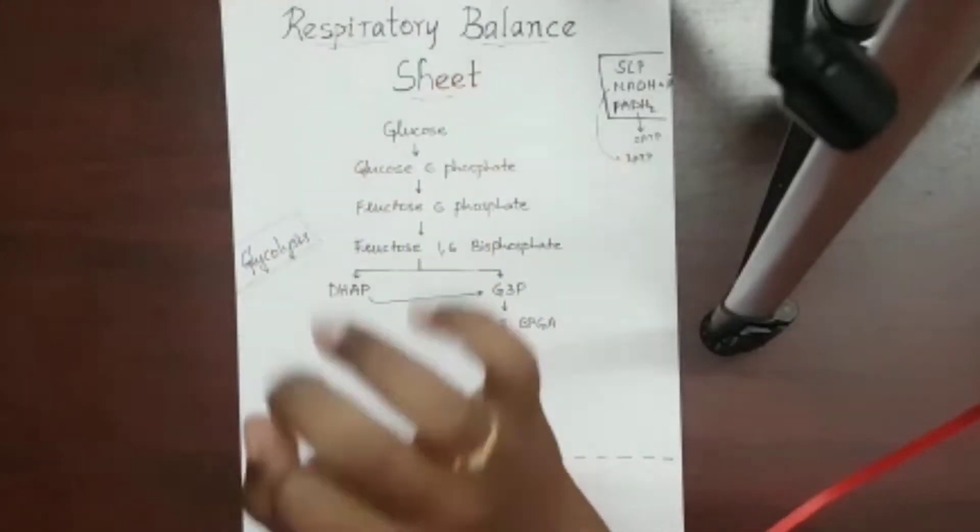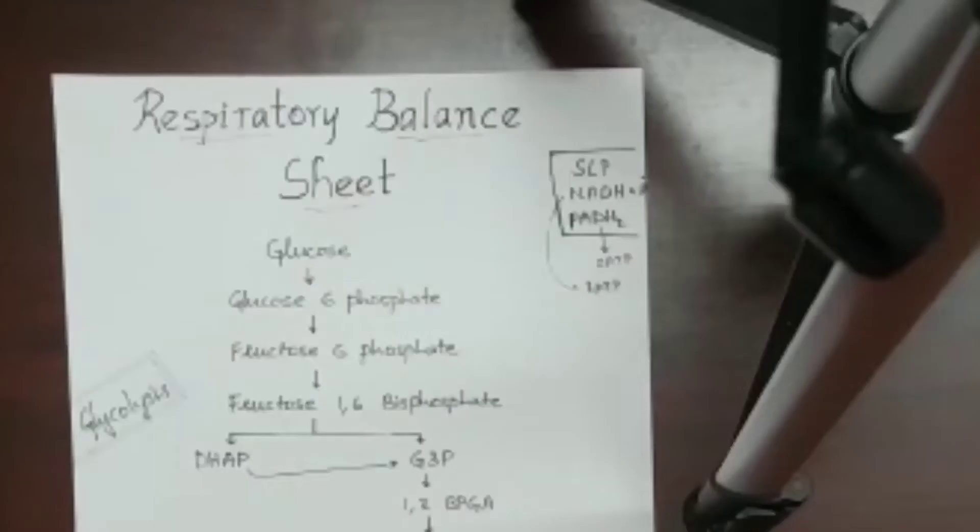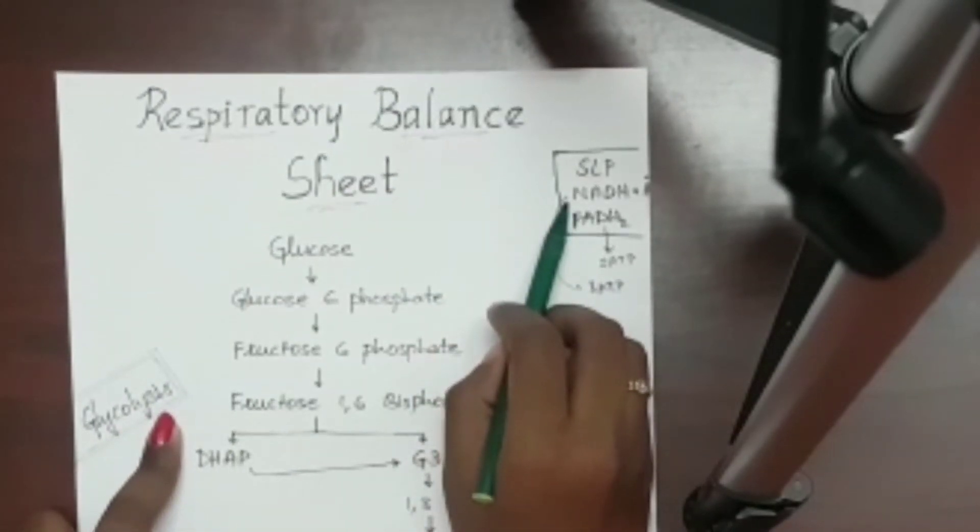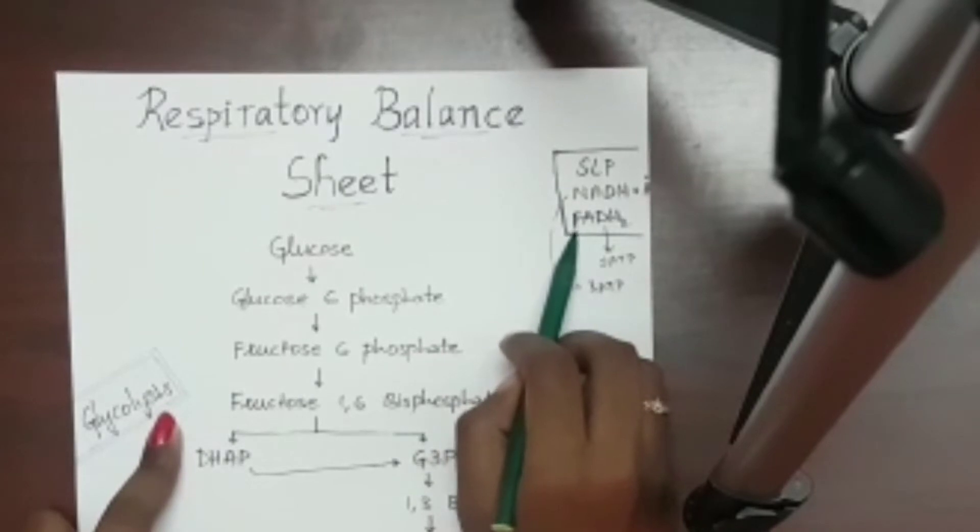I am here in this video with another topic that is respiratory balance sheet. In this respiratory balance sheet, we will see the net gain of ATP in the whole respiration process. There are three ways how ATPs are formed. First is from substrate level phosphorylation, second from NADH++, third from FADH2.